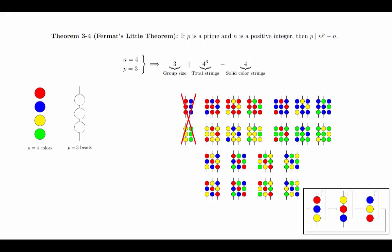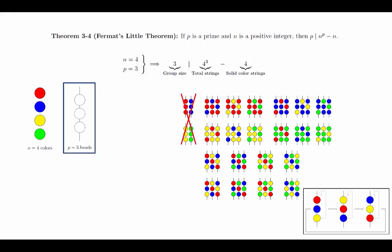If we think about this proof, we realize that there is nothing special about the number of colors — we could have had 5 colors and the logic would not have changed. This means that the proof is independent of the value of n. But we do need to think about the value p and why it's important that p is a prime for this proof to work. We'll end this video here with that open question, and we'll discuss it further in class.